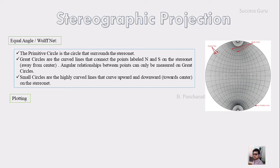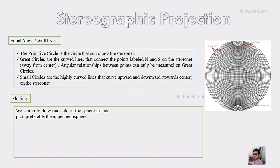For plotting, we can only draw one side of the sphere in the plot — preferably the upper hemisphere for a crystallographic portion. Because a sphere consists of two hemispheres, only one half can be projected in this stereographic projection. For crystallography, we prefer the upper hemisphere.